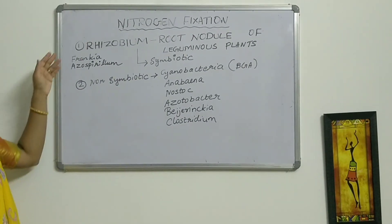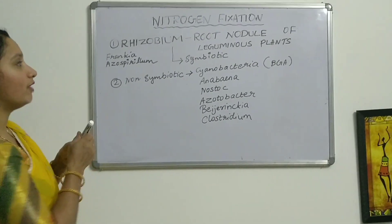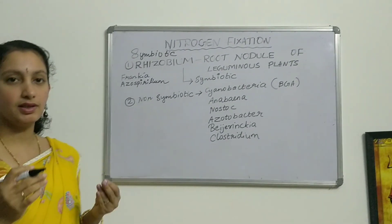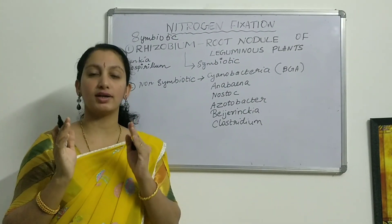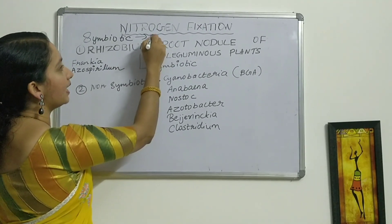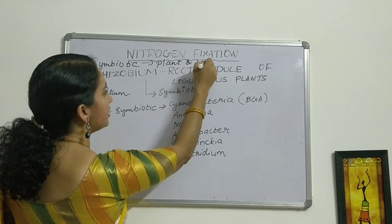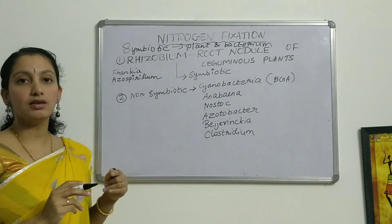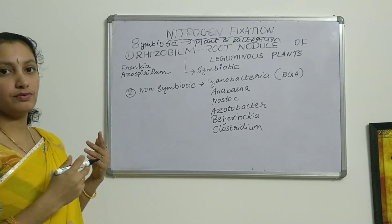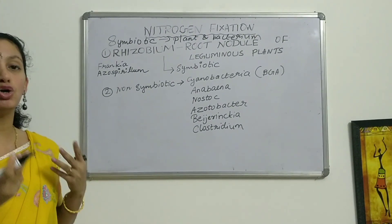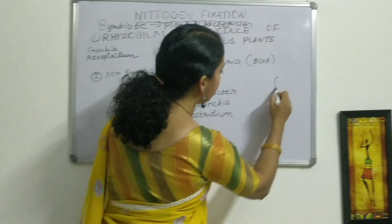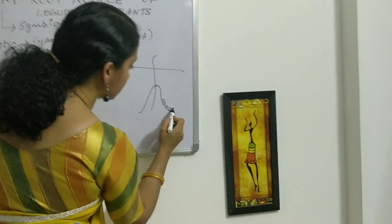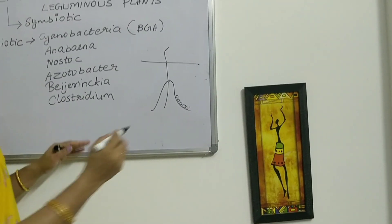Here I have written two types of organisms. The first one is symbiotic. What does symbiotic mean? The association between two organisms — here one is plant and the second one is bacterium. The plants which are leguminous plants have root nodules. If this is the plant root and this is the ground, here you can see some round structures. These structures are called root nodules.